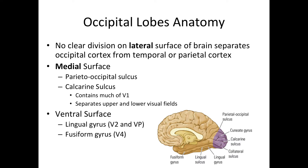On the medial side of the occipital cortex, there's also a clear landmark called the calcarine sulcus. This sulcus contains much of our primary visual cortex, or V1. Whenever I talk about visual cortices, I will refer to V1, V2, V3, etc., where V1 is the primary visual cortex, V2 is the secondary visual cortex, and so on — we'll talk about those in more detail in a later slide.